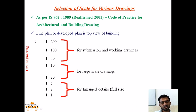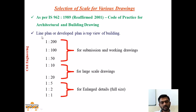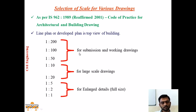Now let us see the recommendations given by IS 962 1989 reaffirmed in 2001, which is the code of practice for architectural and building drawing. The first recommendation is selection of scale for various drawings. When submitting drawings for sanctioning - that is, submission drawings - the scale required will be 1:200 or 1:250. Submission drawings are drawings required for sanctioning from the plan sanctioning authority.